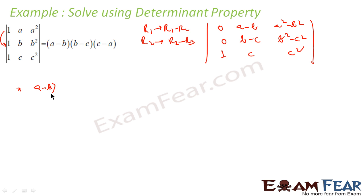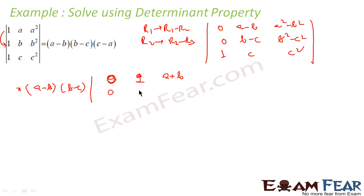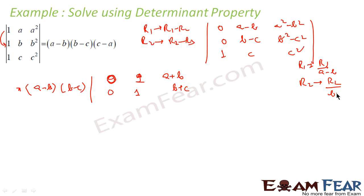So let me take out those common factors. I get a minus b into b minus c. Then dividing R1 by a minus b: a minus b over a minus b is 1, and a squared minus b squared over a minus b is a plus b. The operation I'm following is R1 equals R1 divided by a minus b, and R2 equals R2 divided by b minus c.